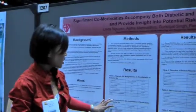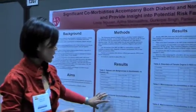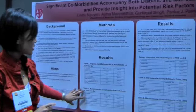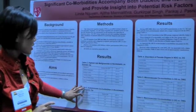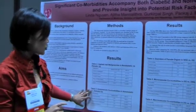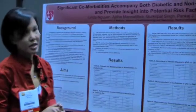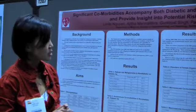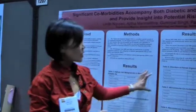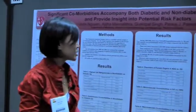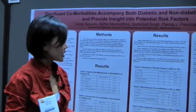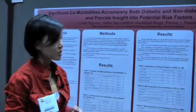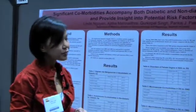We also found that there was a higher prevalence or higher risk of autoimmune comorbidities in the non-diabetic gastroparesis patients, as well as disorders of female organs — ovarian cysts, endometriosis, and menopausal disorders.